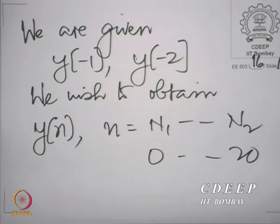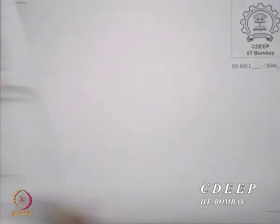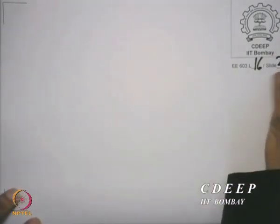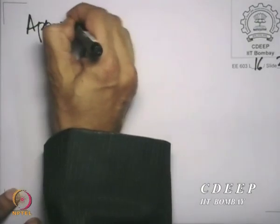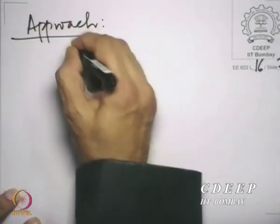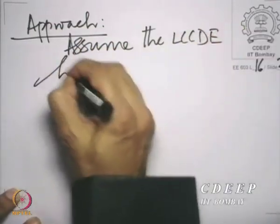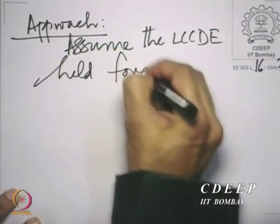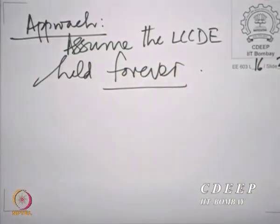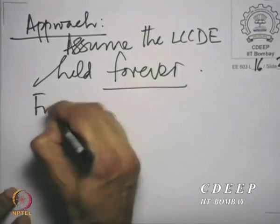How do we proceed? The approach is to, for a moment, assume that this difference equation lasted forever — assume the LCCDE held forever — and find the corresponding system function.